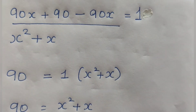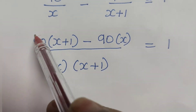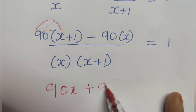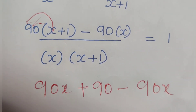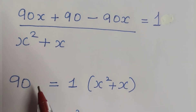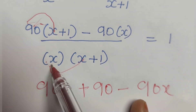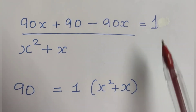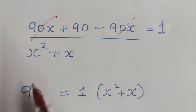Expanding the numerator: 90X plus 90 minus 90X, divided by X into X plus 1 equals 1. The 90X and minus 90X cancel out, leaving 90 remaining in the numerator. The denominator X into X plus 1 expands to X squared plus X.